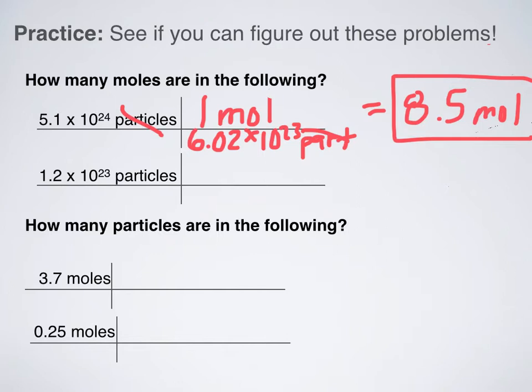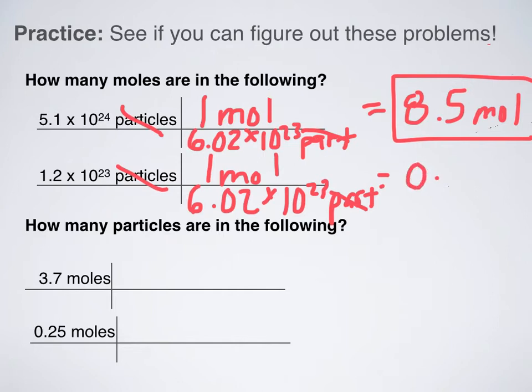Let's try the next one. 1.2 times 10 to the 23rd particles. So I've got 1 mole again, 6.02 times 10 to the 23rd particles. My units are going to cancel out particles. And when I plug that into my calculator, I get 0.20 moles. So that's how I would do the first two questions.